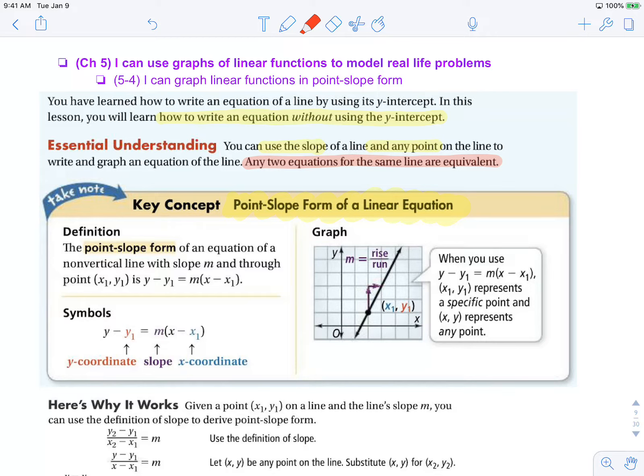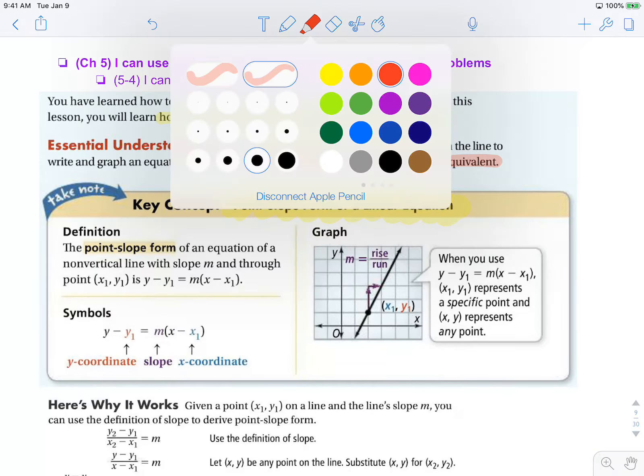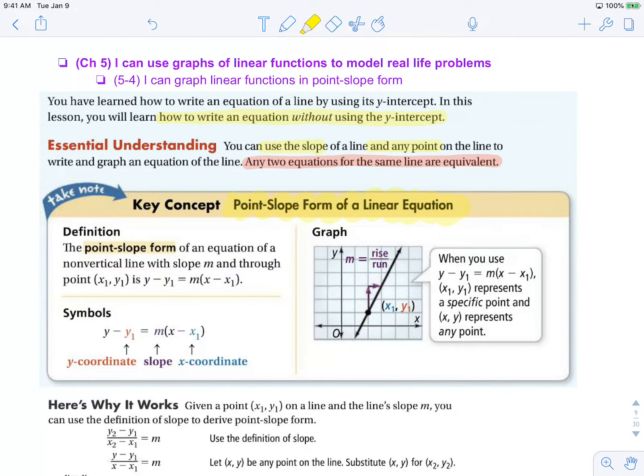So since we are using a point and a slope, the name of this form of a line is point-slope form. And the equation we have that we will ultimately memorize for this equation is y minus y1 equals m times x minus x1. So you need your slope and one point with an x-coordinate and a y-coordinate.